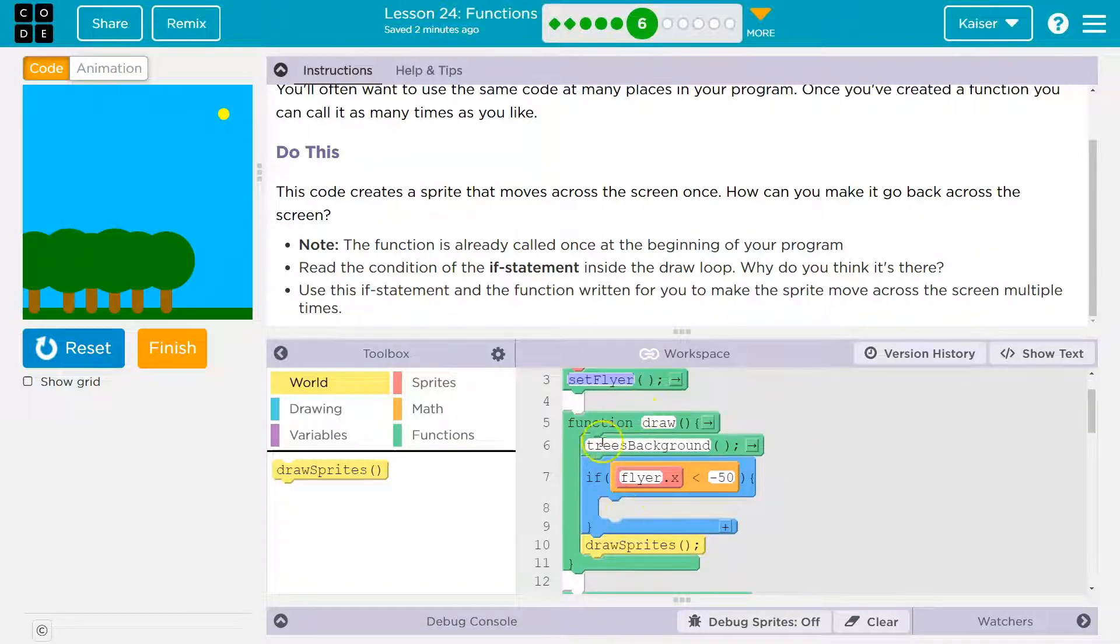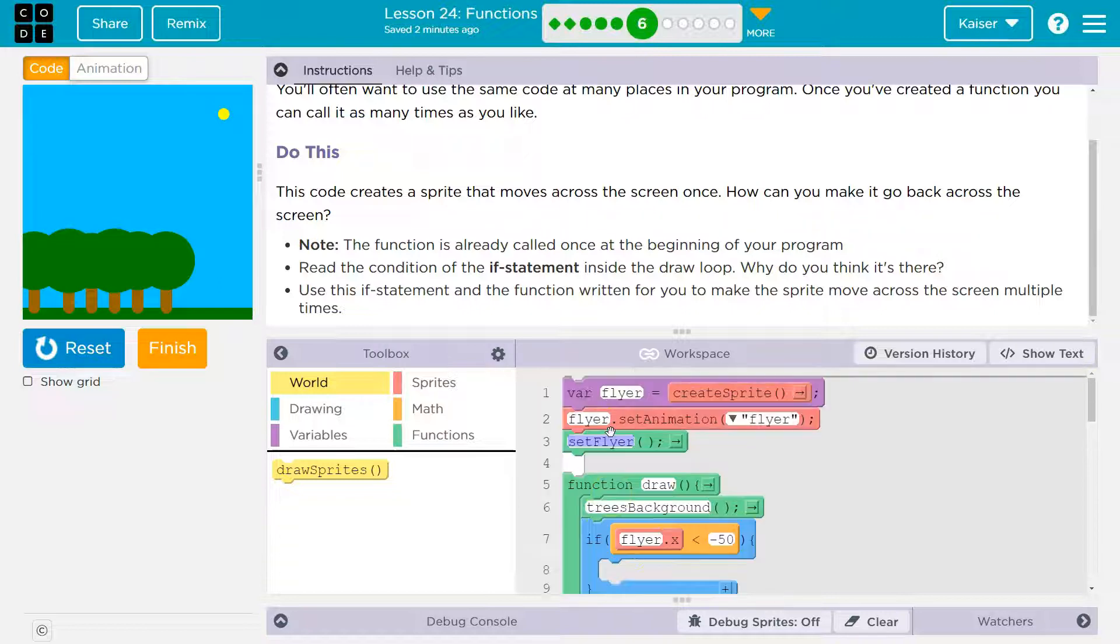We hit the draw loop, and it's going to run the draw loop 30 times a second. Draw loop is the only function that doesn't need to be called. All right. So what's it saying?